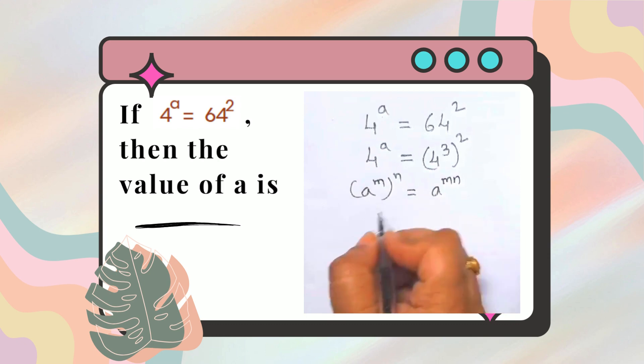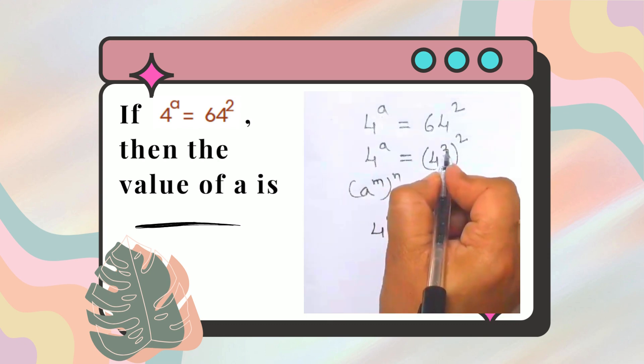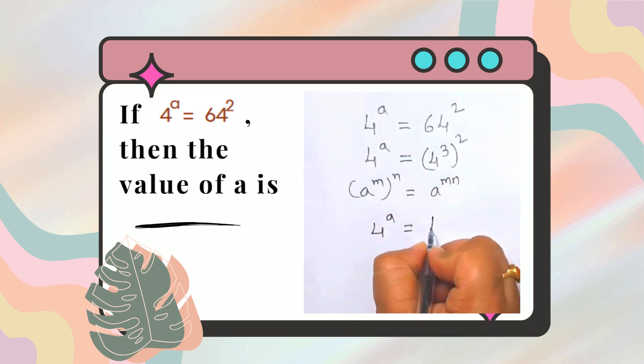So as per power of power rule, 4 raised to 3 raised to the power of 2 will become 4 raised to the power of 6.